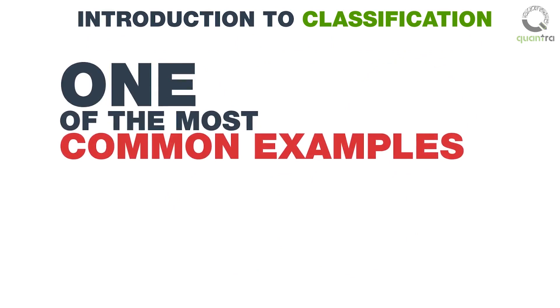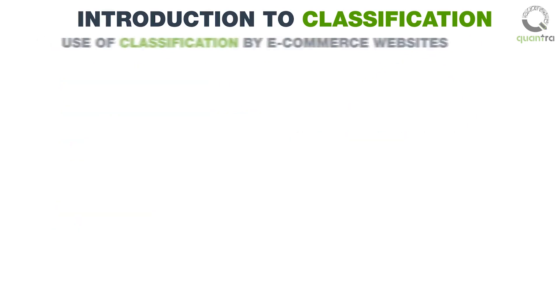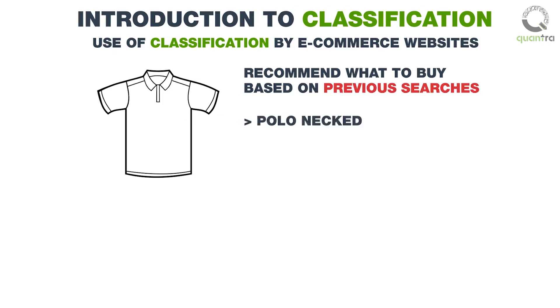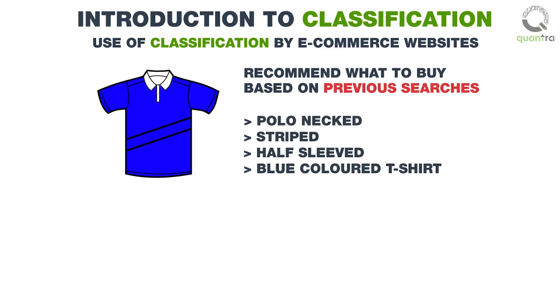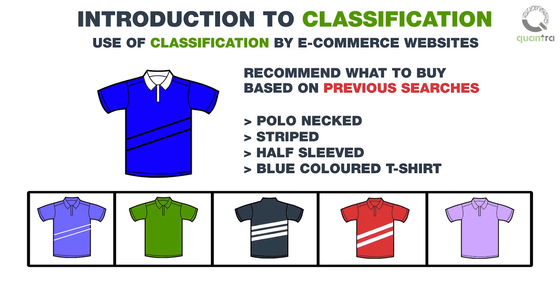One of the most common examples of classification that we see in our day-to-day lives is how e-commerce websites recommend what to buy based on your previous searches. For example, if you are looking for a t-shirt on an e-commerce website and you check out a polo-necked, striped, half-sleeved, and blue-colored t-shirt, the classifier classifies its type, design, and color, and then the website recommends you similar products.